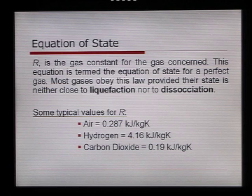So what are some typical values for R? For air, you can see it's around 0.287 kJ per kilogram Kelvin. Hydrogen, much bigger, 4.16 kJ per kilogram Kelvin. And carbon dioxide, 0.19 kJ per kilogram Kelvin.